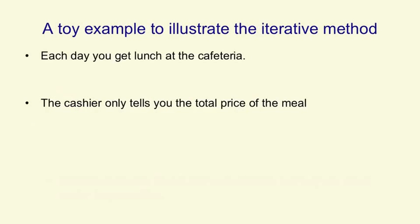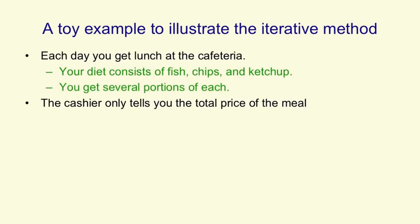So I'm now going to go through a toy example that illustrates an iterative method for finding the weights of a linear neuron. Suppose that every day you get lunch at a cafeteria, and your diet consists entirely of fish, chips and ketchup. Each day you order several portions of each, but on different days it's different numbers of portions. The cashier only tells you the total price of the meal, but after a few days you ought to be able to figure out what the price is for each portion of each kind of thing.